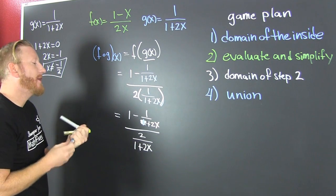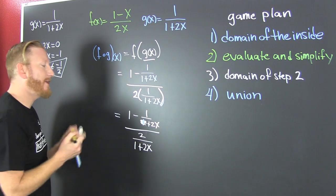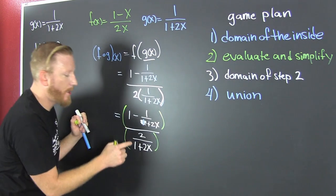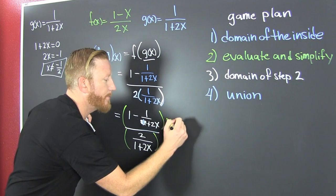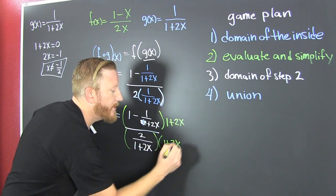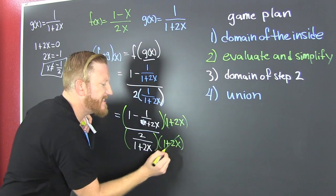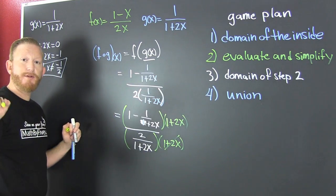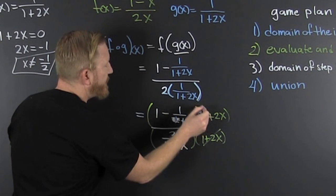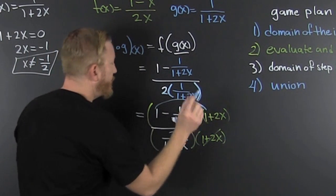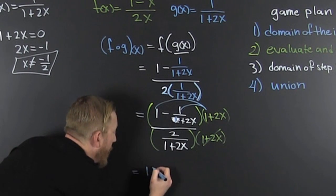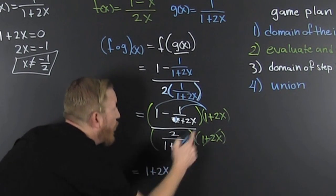Now what? We want to clear those fractions. Let's do it a clean way. By what? Multiplying top and bottom by the common denominator. The common denominator of all denominators is 1 plus 2x. 1 plus 2x. What do we see? We see this guy.